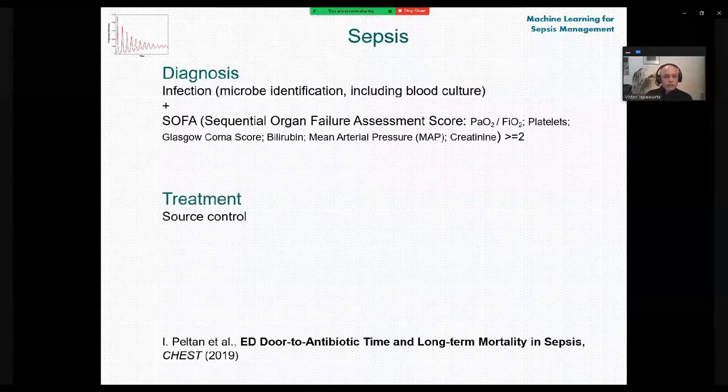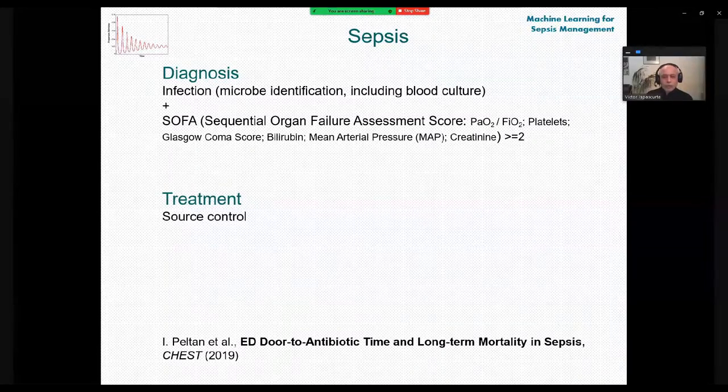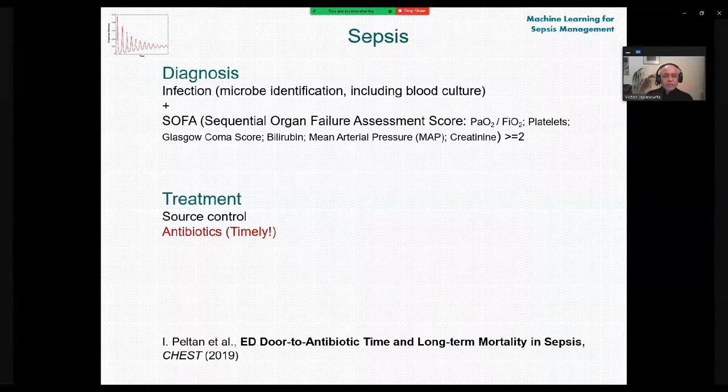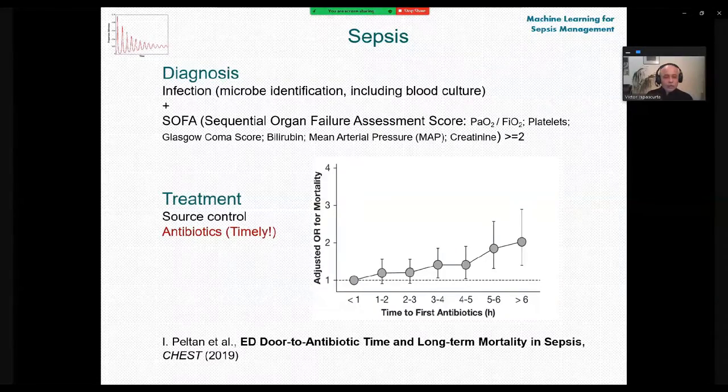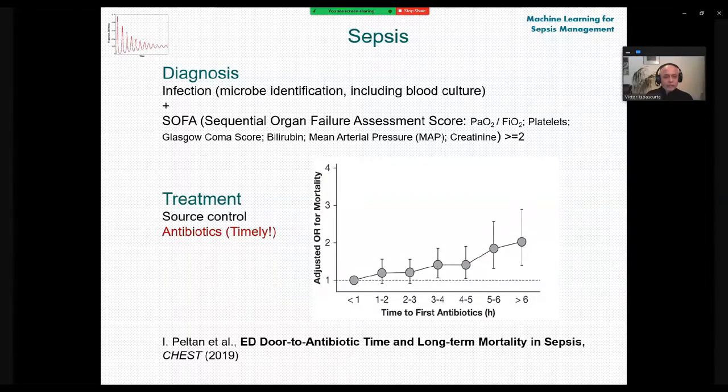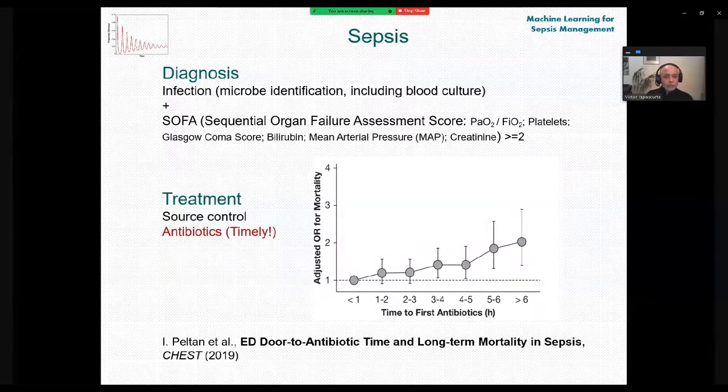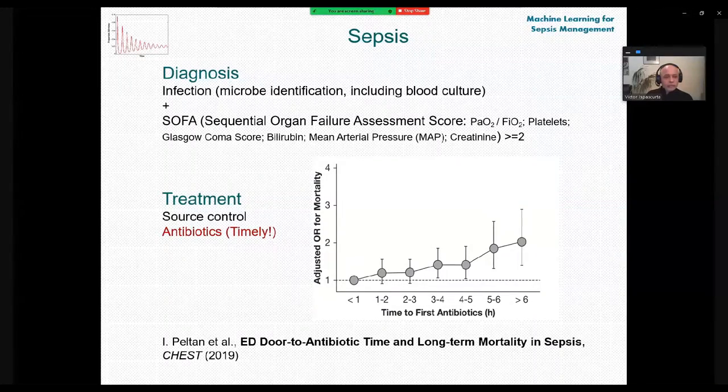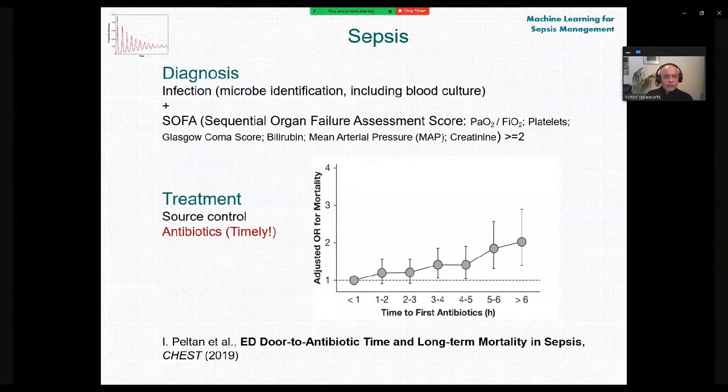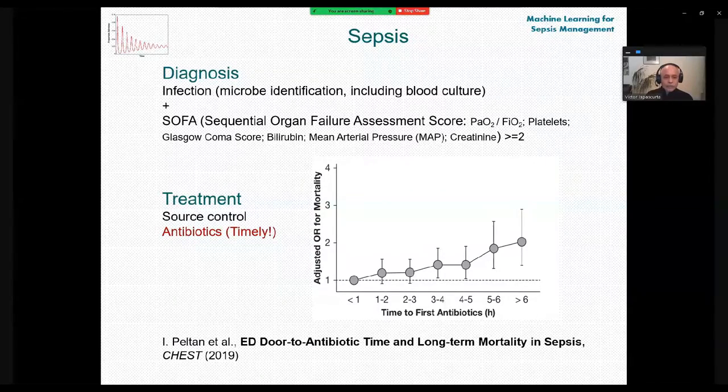Next, the treatment. The primary importance here is the source control and antibiotics that should be used timely. Timely means without a delay and the plot illustrates what means a delay in antibiotic administration. With every hour the mortality will increase and exceeding 6 to 5 hours with antibiotic treatment can cause a double increase in mortality.